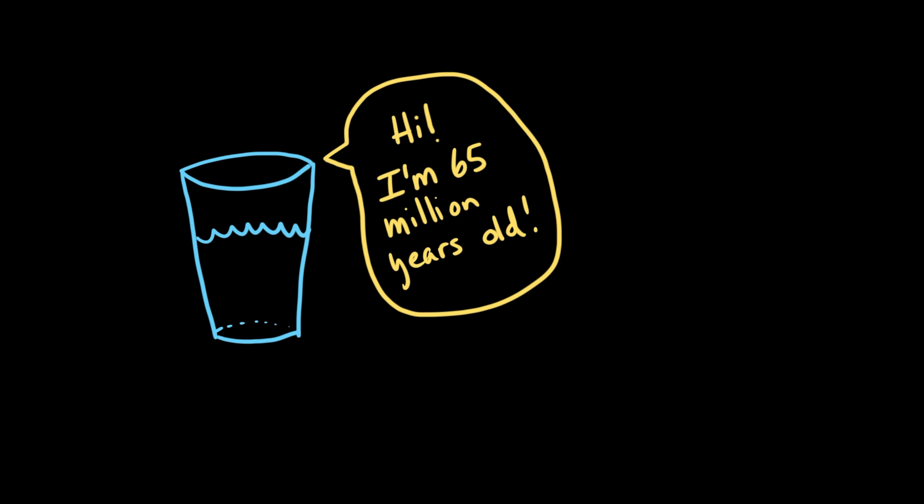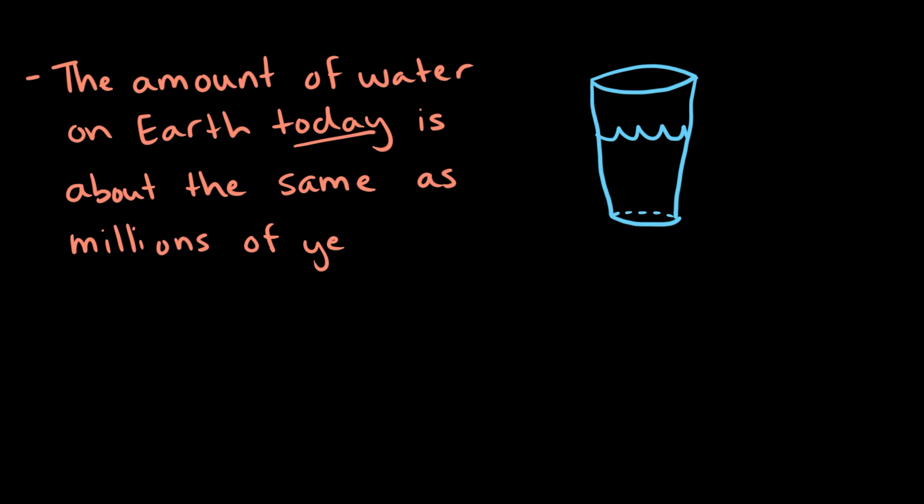Scientists estimate that the water on Earth is at least 4.6 billion years old. And the amount of water on Earth today, in lakes, rivers, oceans, glaciers, even under the ground and up in the clouds, it's about the same as it was millions and millions of years ago.